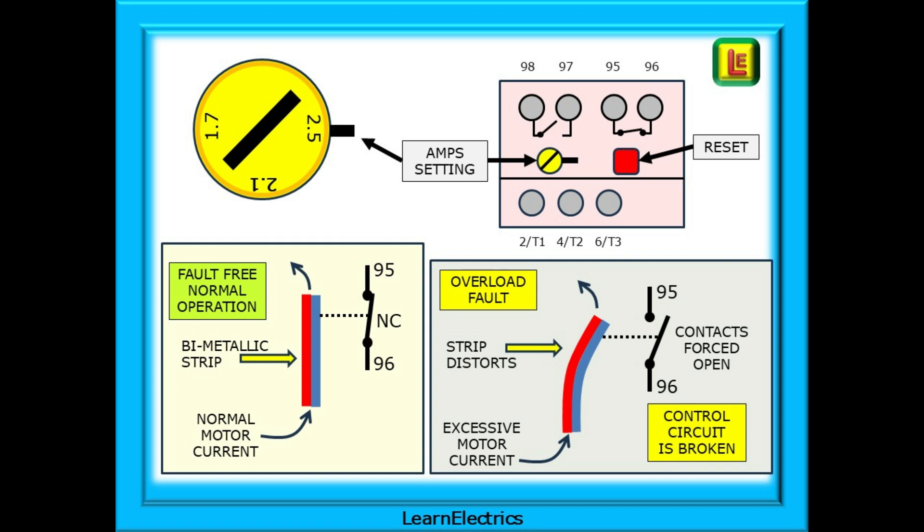However, if we overload the motor, say we load a half ton conveyor with two tons of parcels, the motor will draw extra current. This will cause the bimetallic strip to heat up. The heat will be above that which it can easily lose and the strip will distort. At a certain point the distortion will be enough to cause the normally closed contacts at terminals 95 and 96 to open and will break the control circuit wiring.